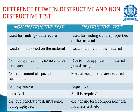Difference between destructive and non-destructive testing: In NDT, the purpose is to find defects in materials, whereas in destructive testing it is to find the properties of the material. In NDT, load is not applied so there is no material damage; in destructive testing, load is applied causing damage. NDT does not require special equipment, while destructive testing does. NDT is less expensive; destructive testing is expensive. NDT requires less skilled labor; destructive testing requires skilled labor. Examples of NDT include dye penetrant testing, magnetic particle testing, ultrasonic testing, radiography, and thermography. Examples of destructive testing include tensile test, compression test, and hardness test.